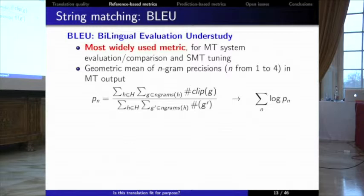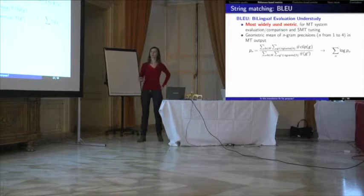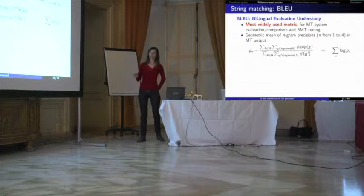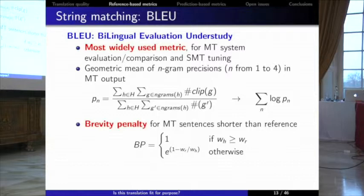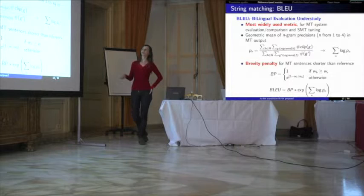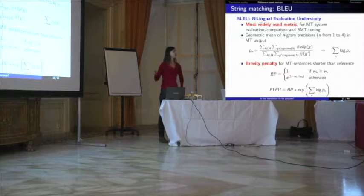The last reference-based metric I'll cover is BLEU, which is basically a geometric mean of n-gram precisions — how many of the n-grams in the MT output are found in the reference — aggregated over sentences and documents, with a brevity penalty for shorter sentences. It's very simple, very cheap to calculate, very fast, and it's used in basically every MT paper. It has lots of limitations, but people still use it.